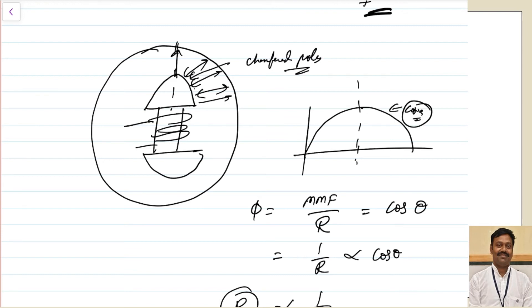Another way to reduce space harmonics is to make the winding such that the gap between two adjacent slots is as small as possible. When the gap between adjacent slots is minimized, the variation of reluctance decreases and the flux becomes more uniform. In other words, we should distribute the slots such that the maximum possible number of slots are used — this automatically makes your flux wave nearly sinusoidal. This is the way you can eliminate your space harmonics.